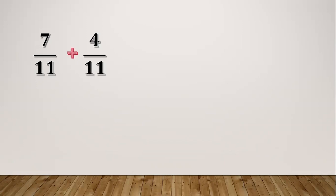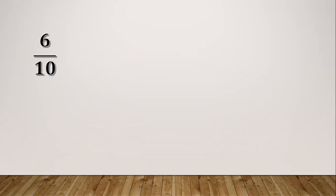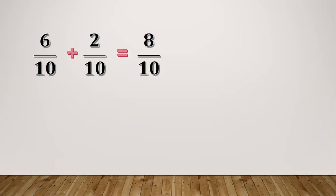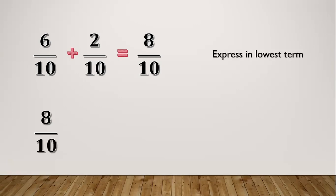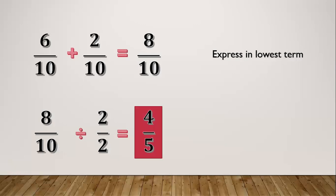Another example: seven elevenths plus four elevenths. Seven plus four equals eleven. Copy the denominator which is eleven, so eleven over eleven equals one. Another example gives us eight tenths. Eight tenths has a common factor of two, so expressed in lowest terms: eight divided by two equals four and ten divided by two equals five. Our final answer is four fifths.